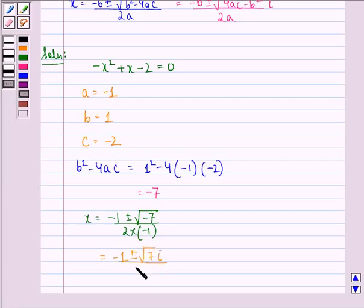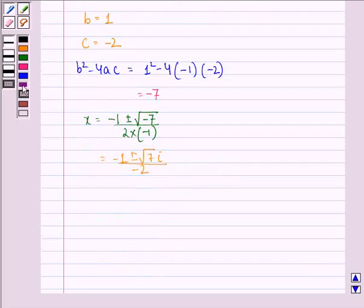Therefore, our solution to this question is (-1 ± √7i) / -2.